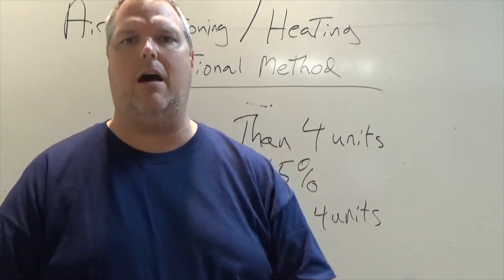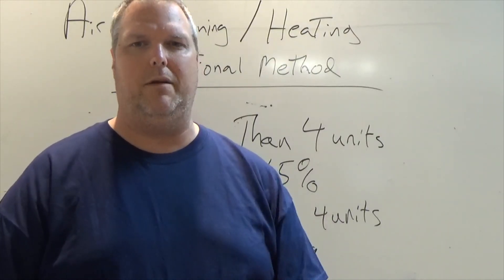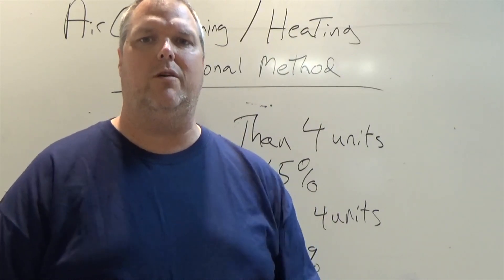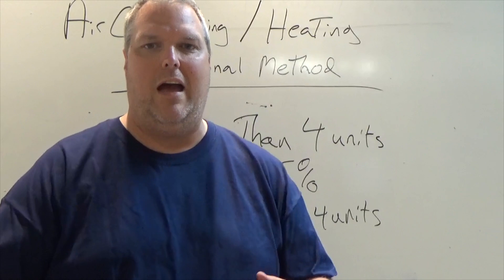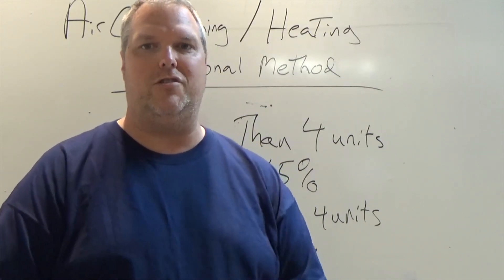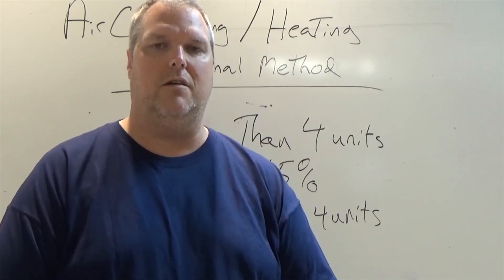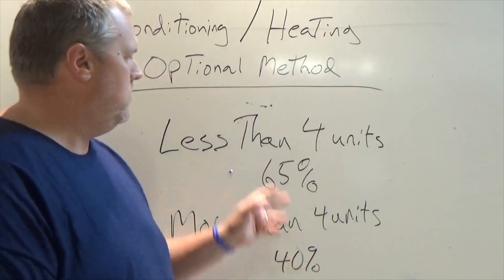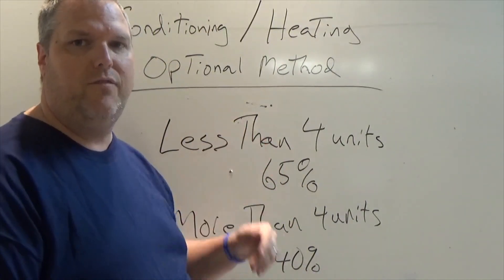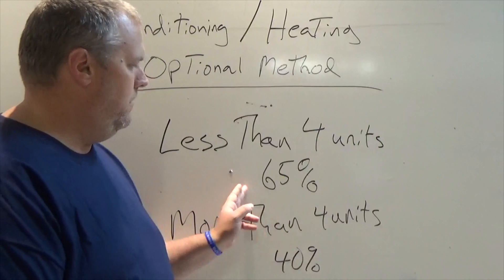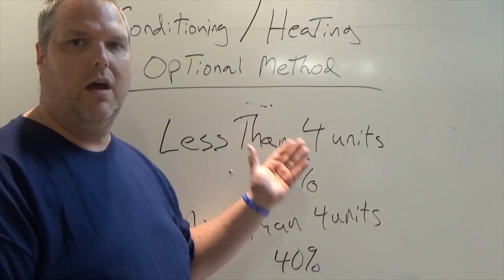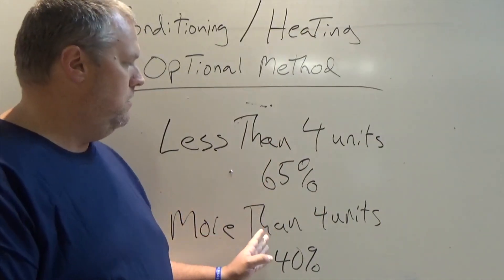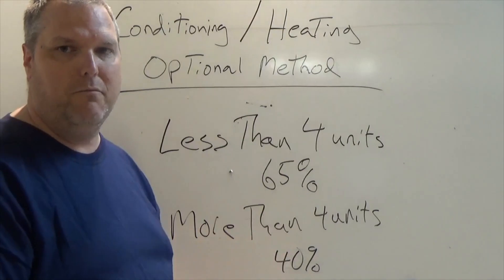I hope that made sense. If it doesn't make sense, leave me a comment down below. Maybe I can explain it a little bit easier. Sometimes things get a little confusing when we go through things like this. But the two main things that we're going to be using is if I have more than four units being controlled, if I have less than four units being controlled, then I know which unit I'm going to use. I'm either going to use 65% for less than four. I'm going to use 40% if I have more.